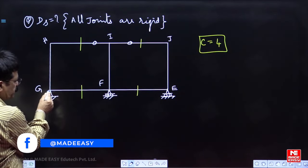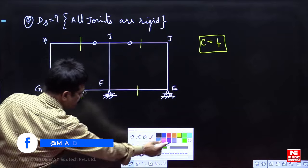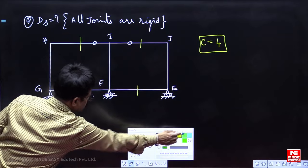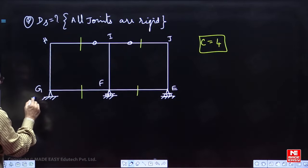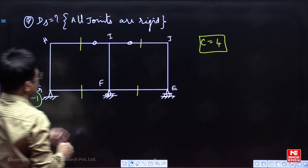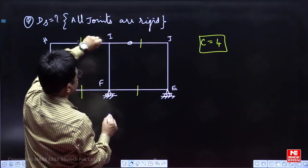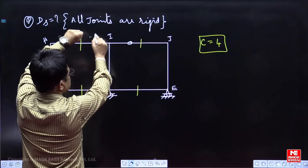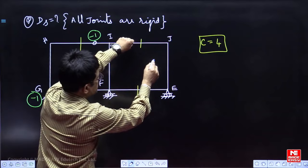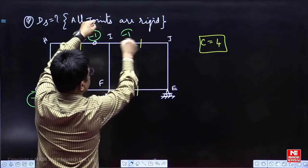Now, you see there is a hinge support. To make it as a fixed support, I have to add one reaction. Since you are unnecessarily adding one reaction, you subtract one here. After cutting, this will rotate, so fix it. Unnecessarily you are fixing minus. You are adding one moment reaction, subtract.